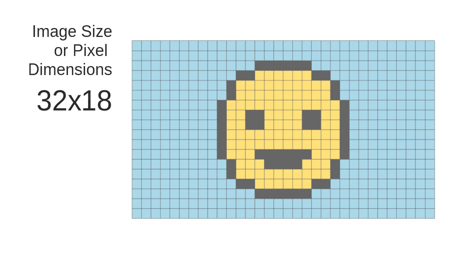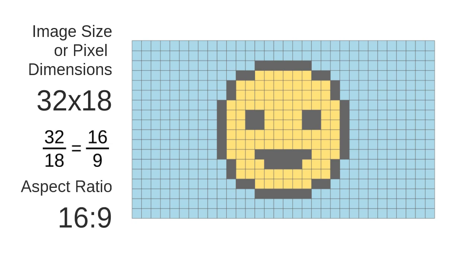These are the pixel dimensions — this is a resolution. This is a resolution expressed as a fraction. We will simplify it. The ratio simplifies to 16x9. This is called an aspect ratio.